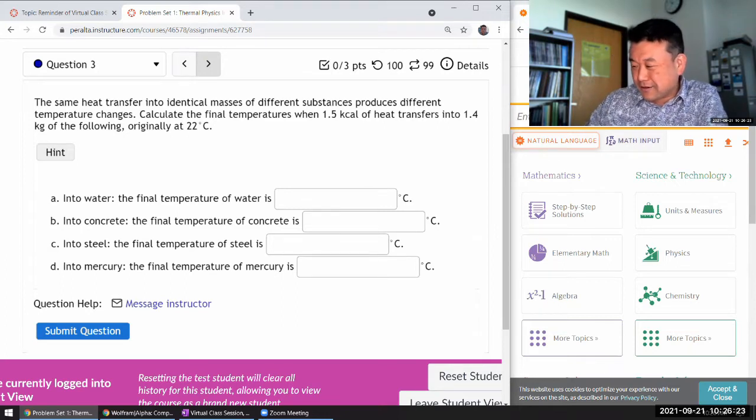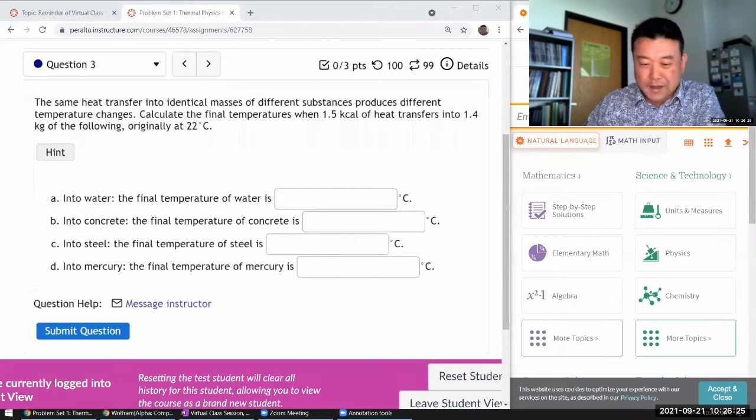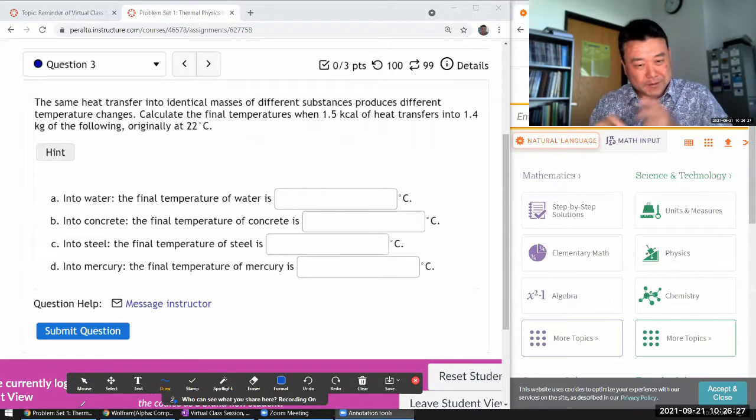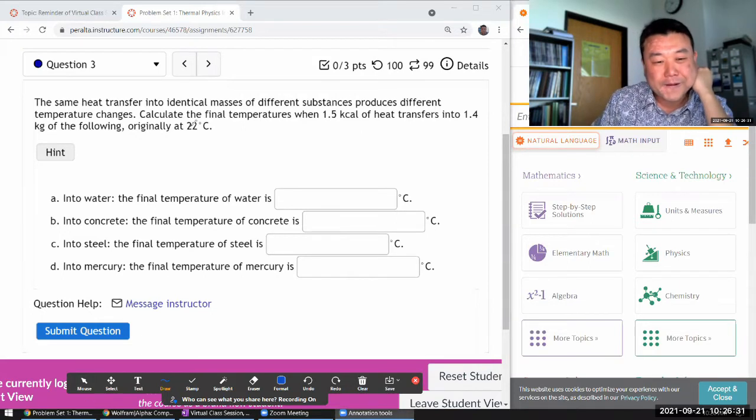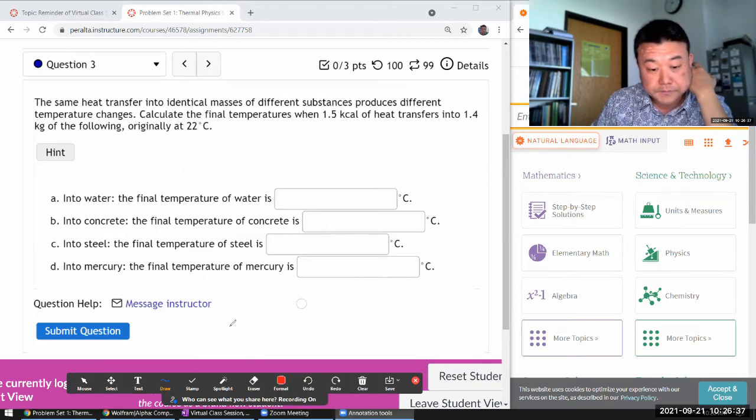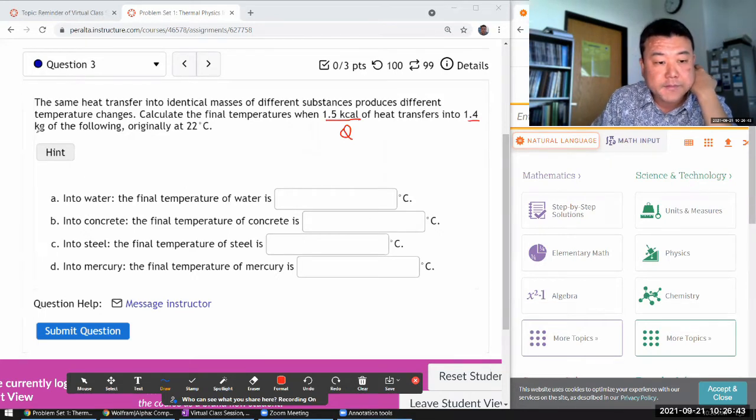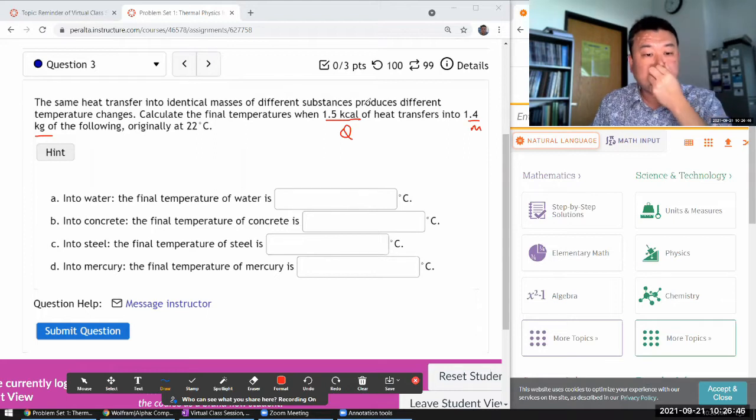So let me, because here there's a bit of relationships to be aware of. So let me first write it down so that I know what I'm calculating from alpha. Let's calculate the final temperatures when some amount of heat is transferred into 1.5 kilogram of the following, originally at some temperature.